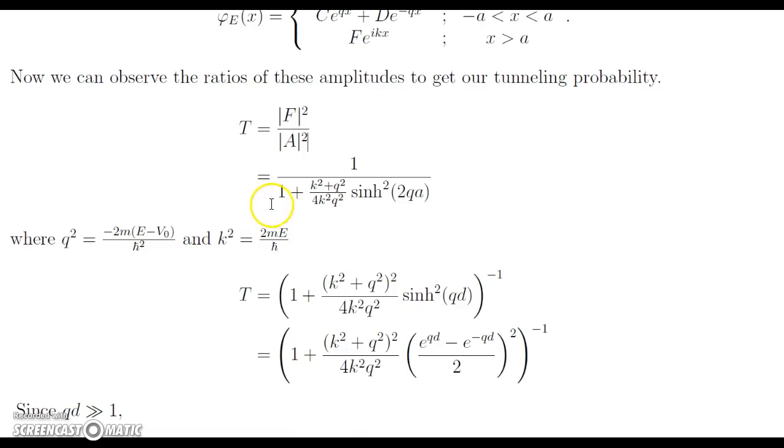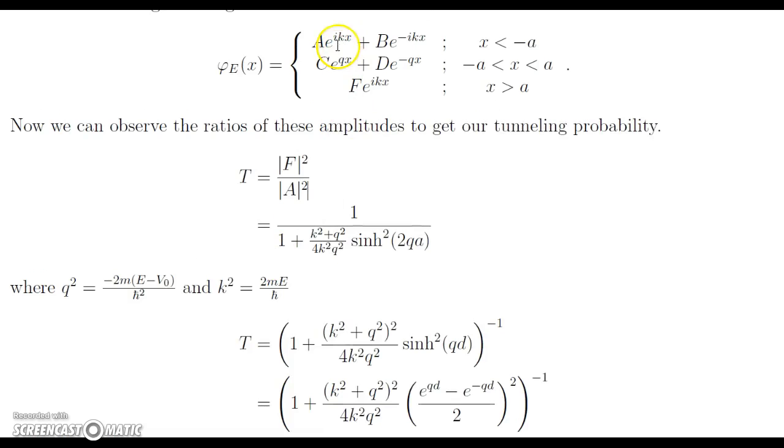So we do this calculation and we get 1 over 1 plus k squared plus q squared over 4k squared q squared times the hyperbolic sine squared of 2qa. Here we know that q squared is equal to negative 2m times the difference of E and V naught all over h bar squared, and k squared is going to be equal to 2mE over h bar squared.